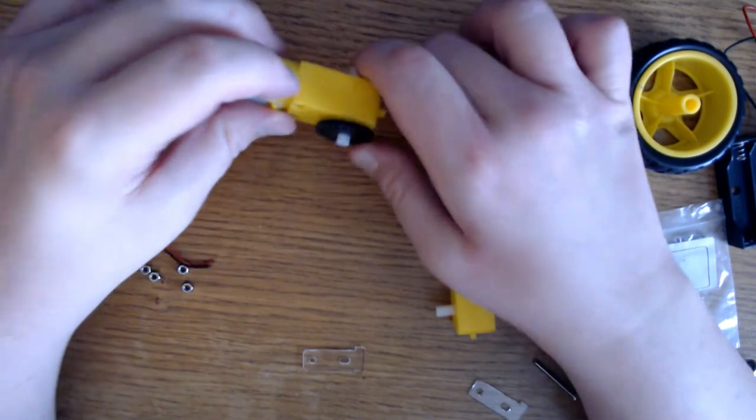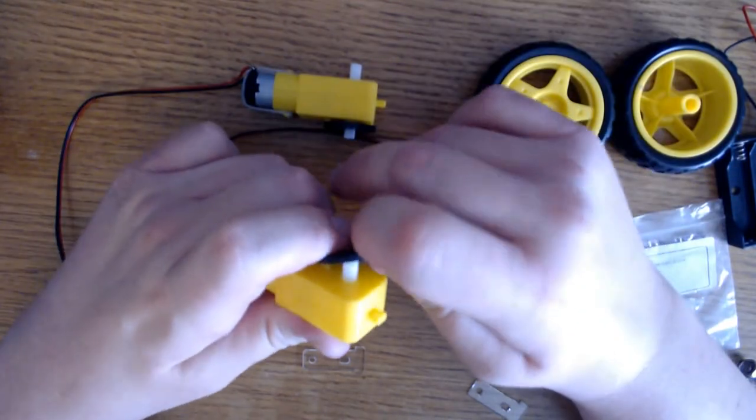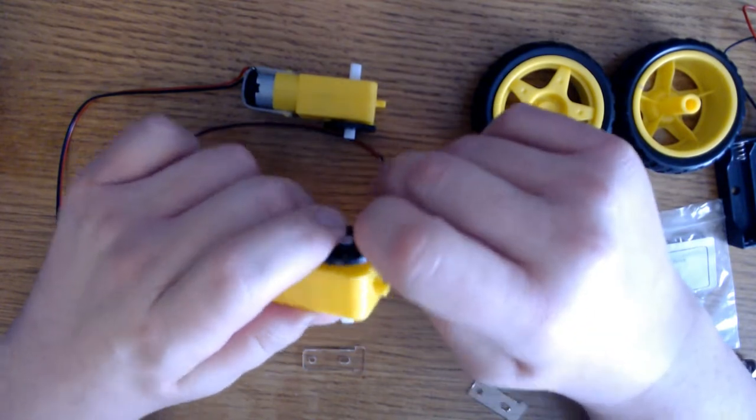These black things here are rotating encoder disc for your motor. I don't have any plans on using it, but I'll go ahead and include that in the build.